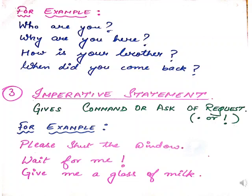Third is the imperative sentence, which gives a command or asks for a request. For example, 'give me a glass of milk' is a command. But 'please shut the window' is a request. So imperative sentences can be either commands or requests.